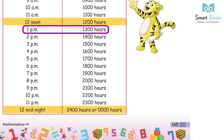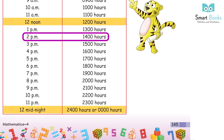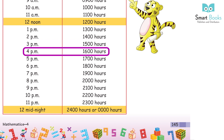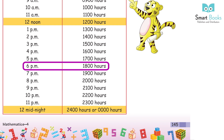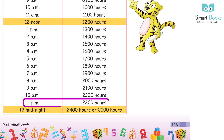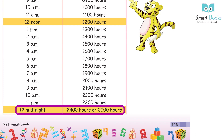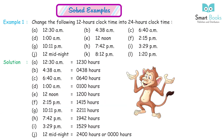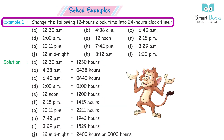Continuing: 1 PM = 1300 hours, 2 PM = 1400 hours, 3 PM = 1500 hours, 4 PM = 1600 hours, 5 PM = 1700 hours, 6 PM = 1800 hours, 7 PM = 1900 hours, 8 PM = 2000 hours, 9 PM = 2100 hours, 10 PM = 2200 hours, 11 PM = 2300 hours, 12 midnight = 2400 hours or 0000 hours.